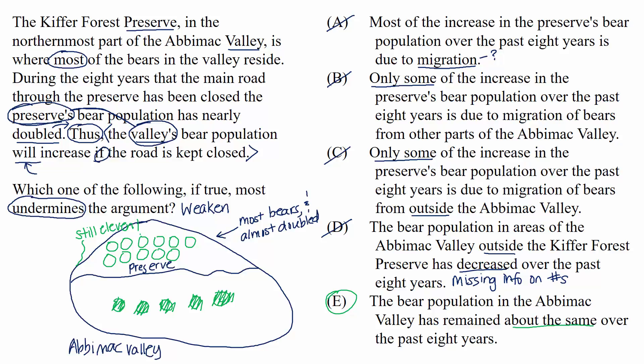To recap: for weakening questions, you're finding the choice that hurts the link between the evidence and the conclusion. It really helps to separate the evidence from the conclusion by seeing the evidence as information that we're given, and then seeing the conclusion as an opinion the arguer makes based on that information. In weakening questions, we want to drive the two pieces farther apart — make it less likely for the conclusion to happen based on the evidence provided. It can also help to pretend that you're adding each choice to the argument and seeing which way the argument moves in terms of quality. Look for any gaps in the argument, where the evidence addresses one thing and the conclusion addresses a different thing. Or attack an argument by finding a possibility the arguer has overlooked. Stay focused on structure and keep your eye on the task.